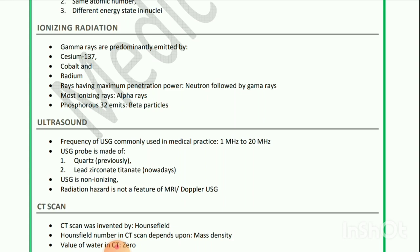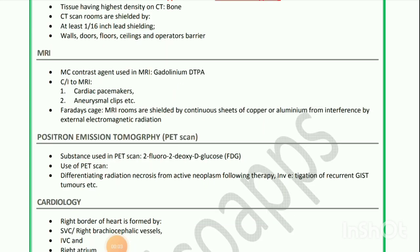CT scan was invented by Hounsfield. The Hounsfield number in CT depends upon mass density. The value of water in CT is zero. The tissue having highest density on CT is bone. CT scan rooms are shielded by at least 1/16 inch lead shielding on walls, doors, floors, ceilings, and operator barriers.